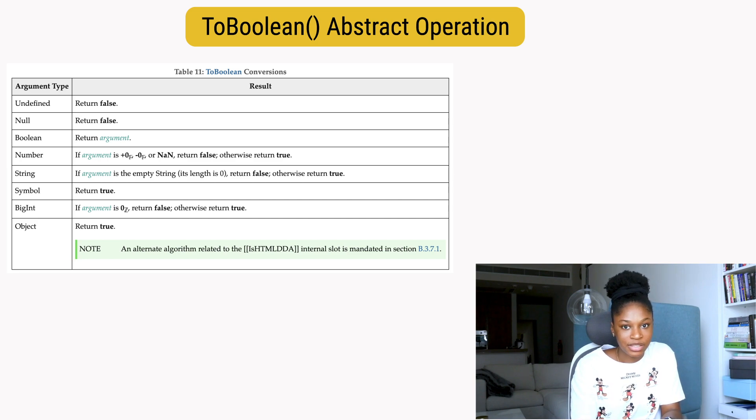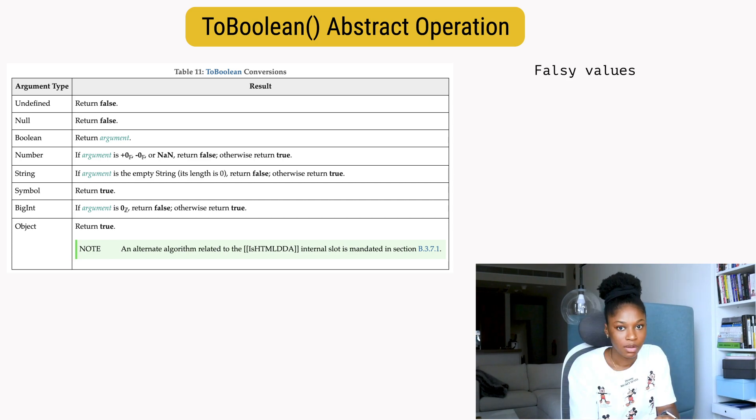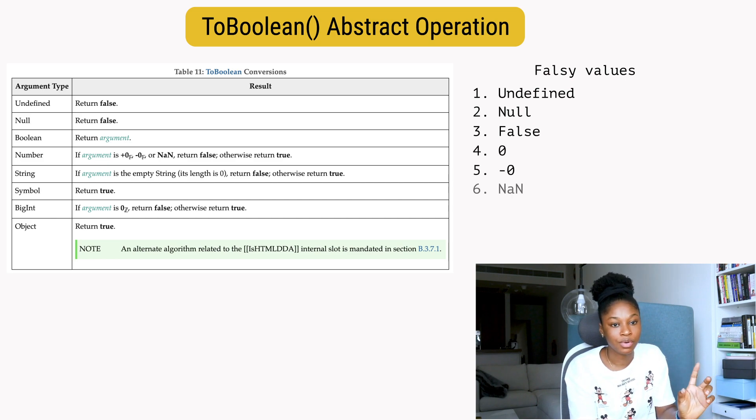On the table we can see all the value data types in JavaScript and what they will return when coerced to boolean. We're going to save out the falsy values first. Undefined returns false, null returns false. For boolean, it says return the argument, so true returns true and false returns false. For number, the falsy values we have are zero, negative zero, and NaN.